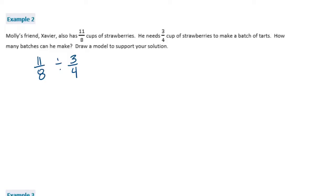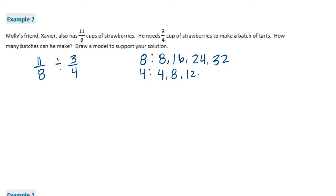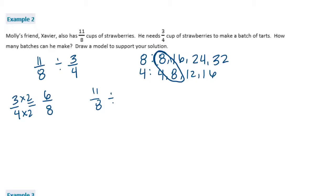We list the multiples for the two denominators: eight and four. Multiples of eight: 8, 16, 24, 32. Multiples of four: 4, 8, 12, 16. The least common multiple is eight. So I can leave eleven-eighths alone and just change three-fourths into eighths. Four times two is eight, so three times two is six — giving us six-eighths. So we have eleven-eighths divided by six-eighths, and now we can draw our model.